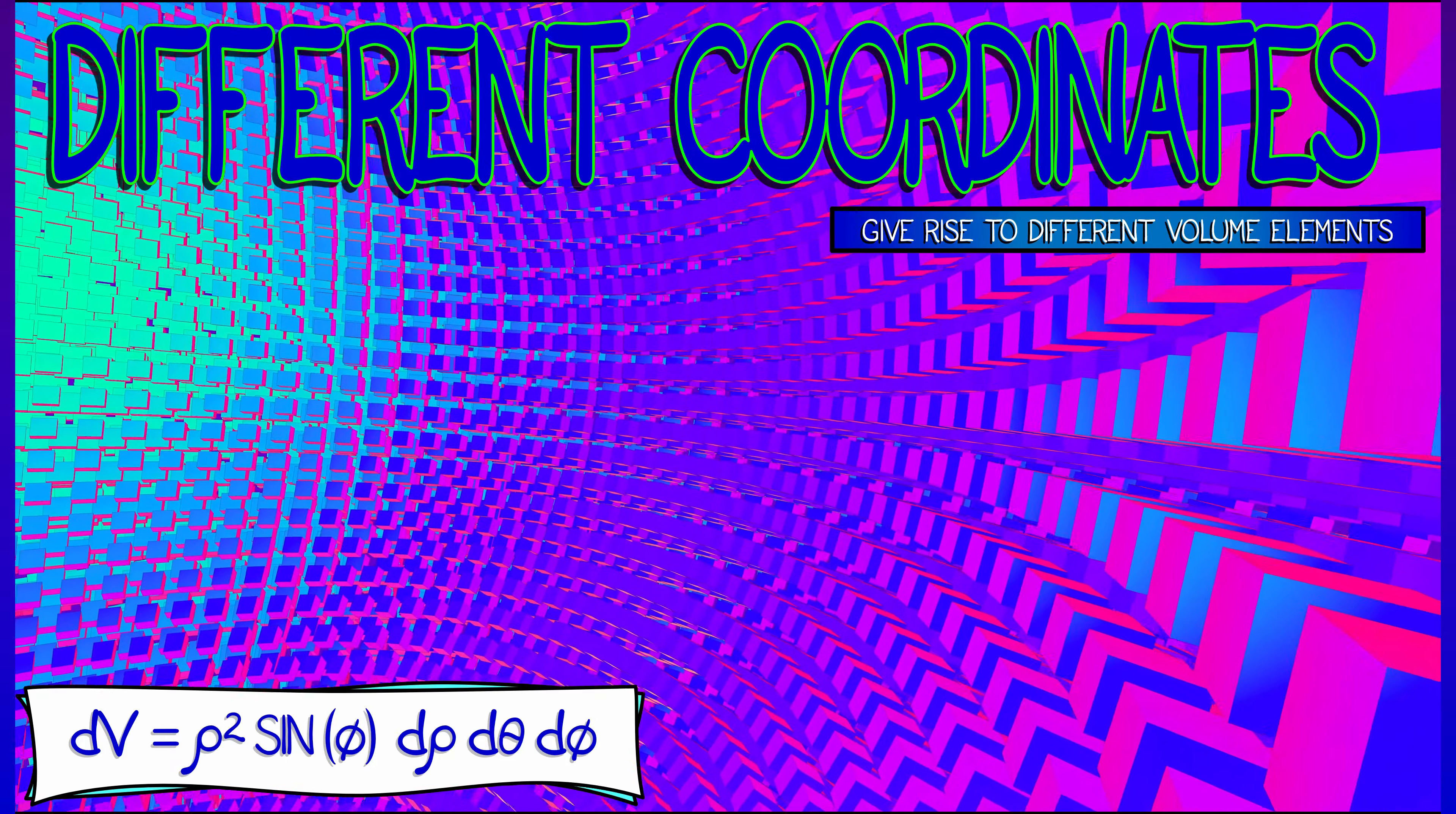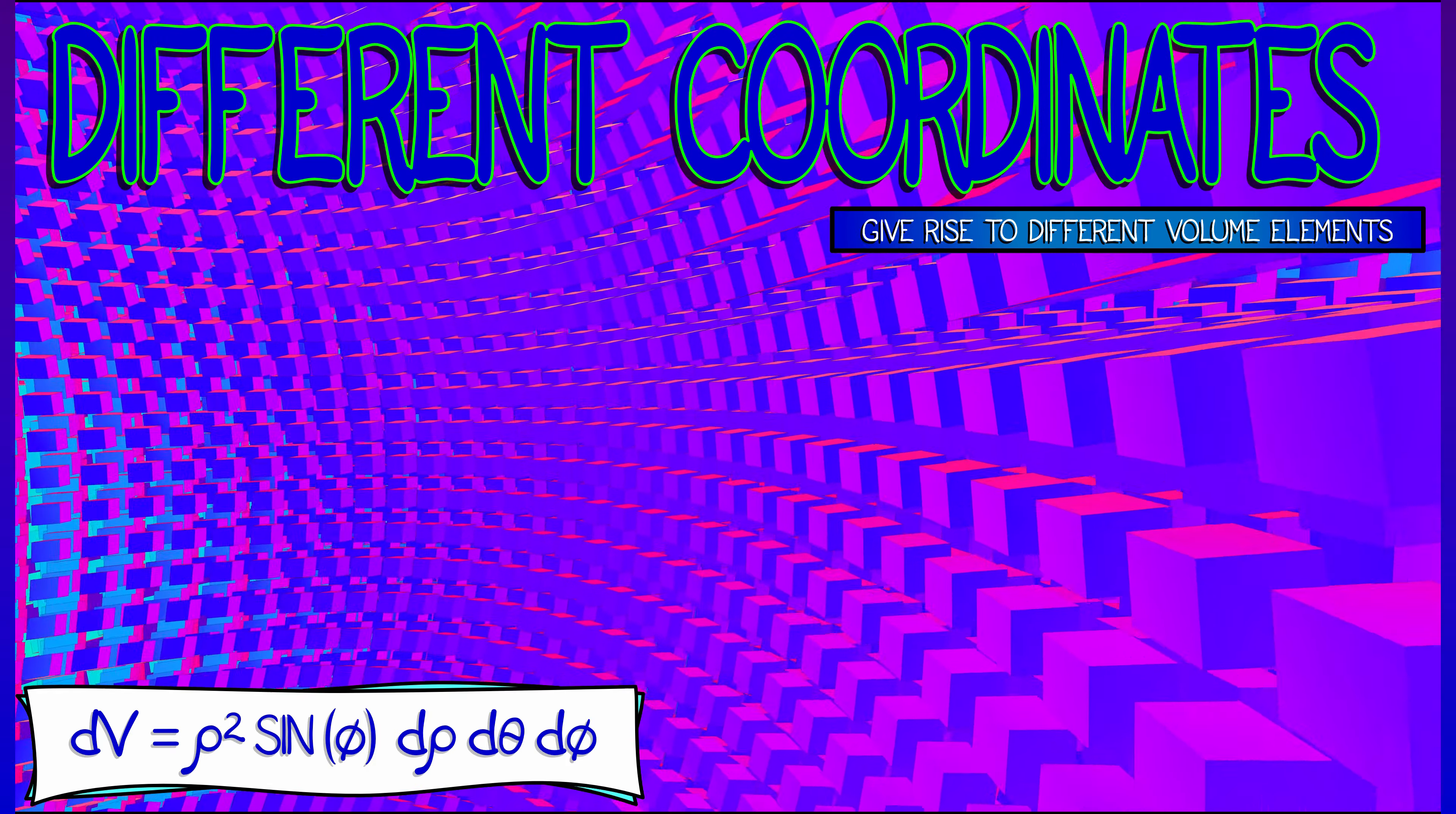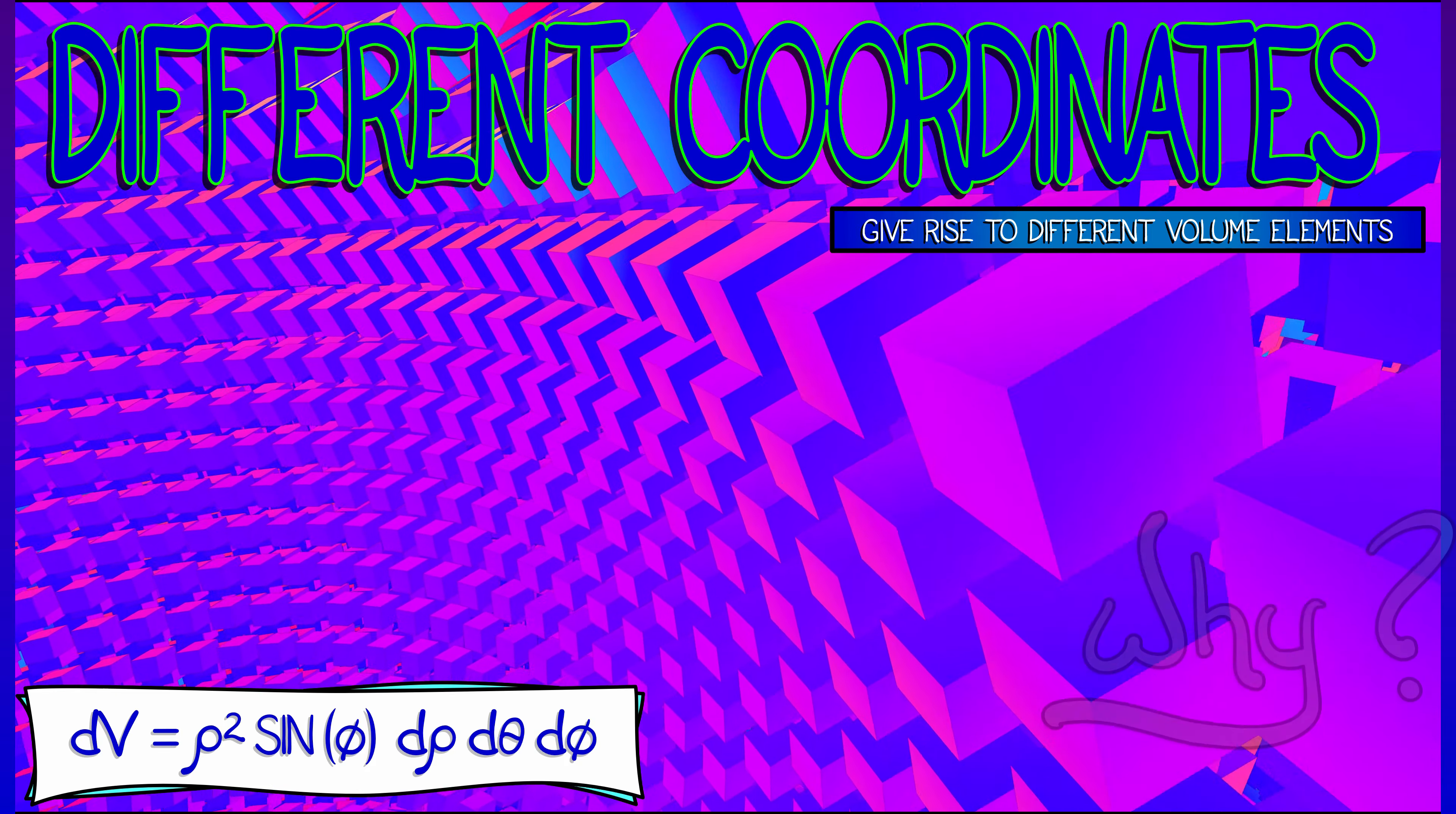And the perpetual question is, why? Why is it that particular volume form? Is there a way to get this without doing a whole bunch of difficult or unintuitive geometry?